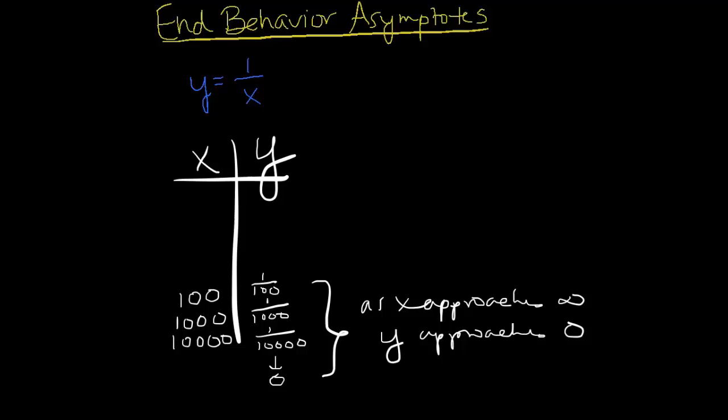So that's where we get the idea as x approaches infinity, the y value is approaching 0. Now, both ends don't have to approach the same value, but actually in this case, they will. So if I try negative 100 or negative 1,000 and so on, we would just get the negative values that we saw there. And as you can see, we're still approaching 0. So as x approaches negative infinity, y is also approaching 0 in that direction.